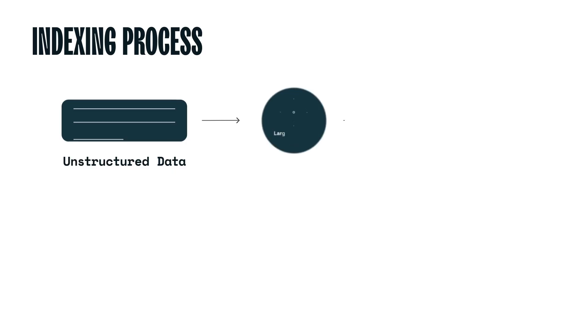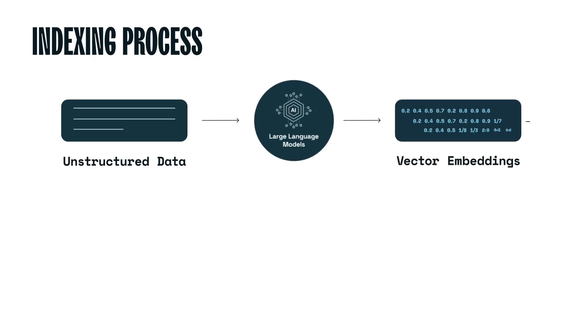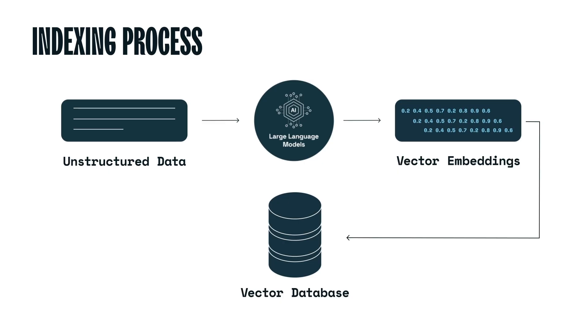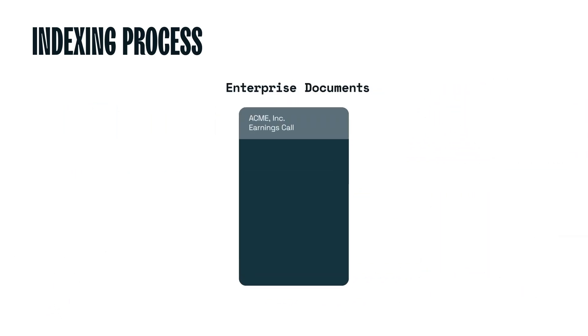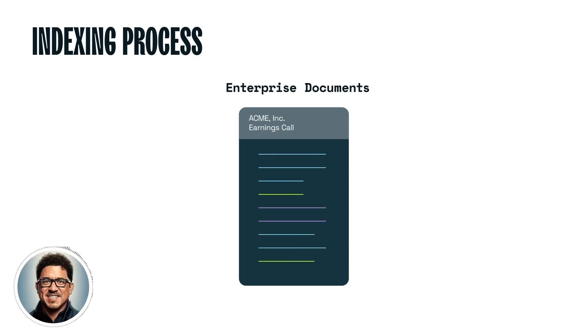Let's focus on the setup of the information retrieval portion of a RAG system — more specifically, the indexing process. In order to efficiently perform dense retrieval based on user queries, we need to populate our data store with information that will provide accurate, up-to-date context. As we previously learned, this data needs to be vectorized and stored in a vector database. Creating a proper data ingestion pipeline for RAG is a complex process that we have so far abstracted and simplified. Let's dive deeper into this aspect of RAG, focusing on the typical documents found in an enterprise environment. These documents can vary widely, from structured reports to informal chat transcripts, each of variable length and with a possible combination of topics.